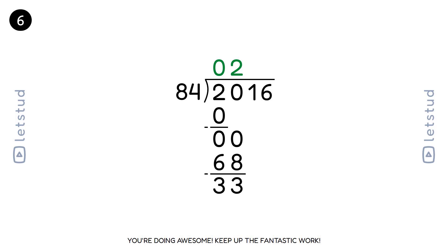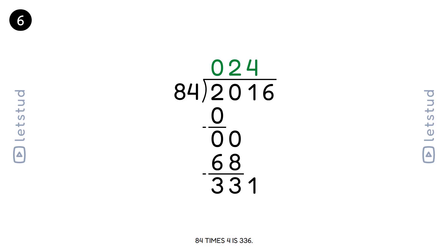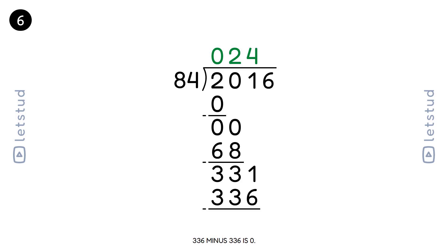You're doing awesome, keep up the fantastic work. Let's bring down the last digit, 6, making it 336. 84 fits into 336 four times. 84 times 4 is 336. 336 minus 336 is 0.